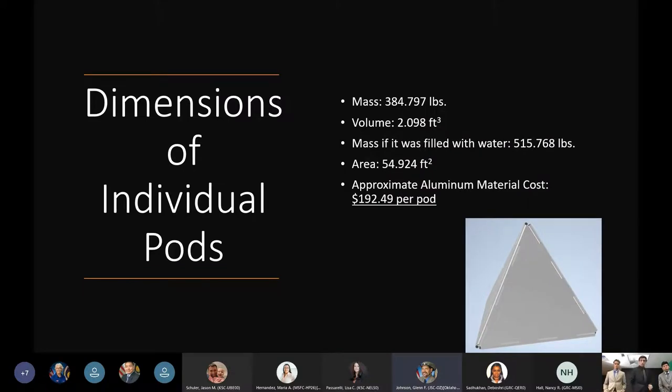About the dimensions: the gross mass of each individual pod without any contents inside is under 400 pounds - it's 384 pounds. Each pod has about a two cubic foot volume. For example, if it was filled with water, each pod would weigh about 515 pounds, bringing the net weight up to around 10,000 pounds. The surface area is around 55 square feet, and the approximate aluminum material cost of each pod is just under $200.